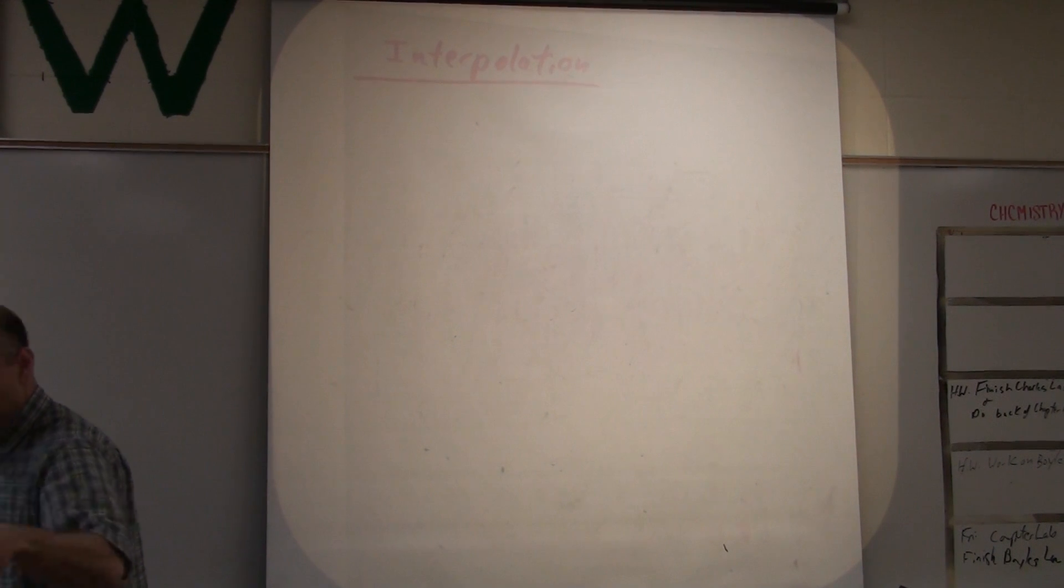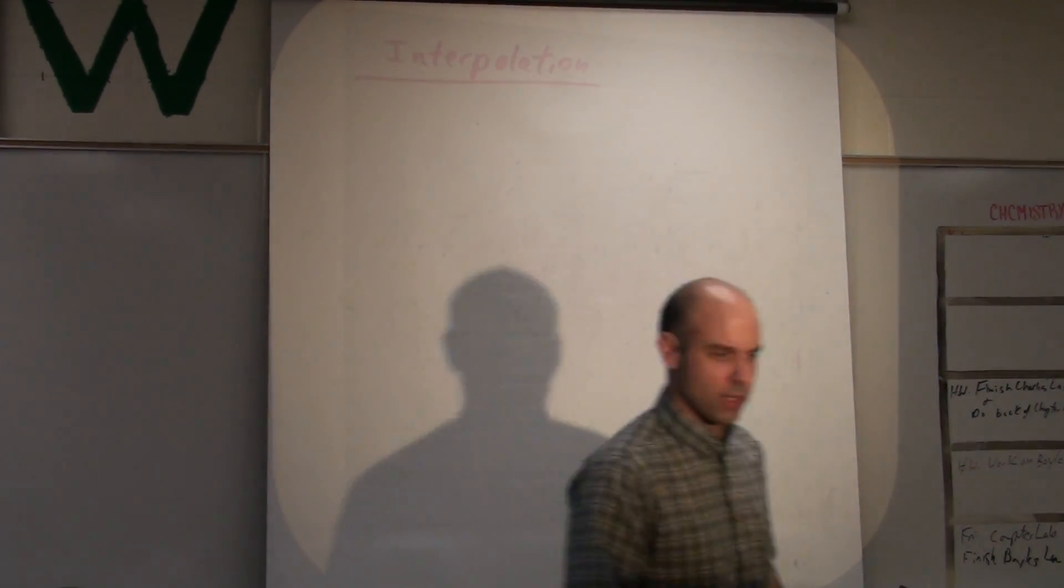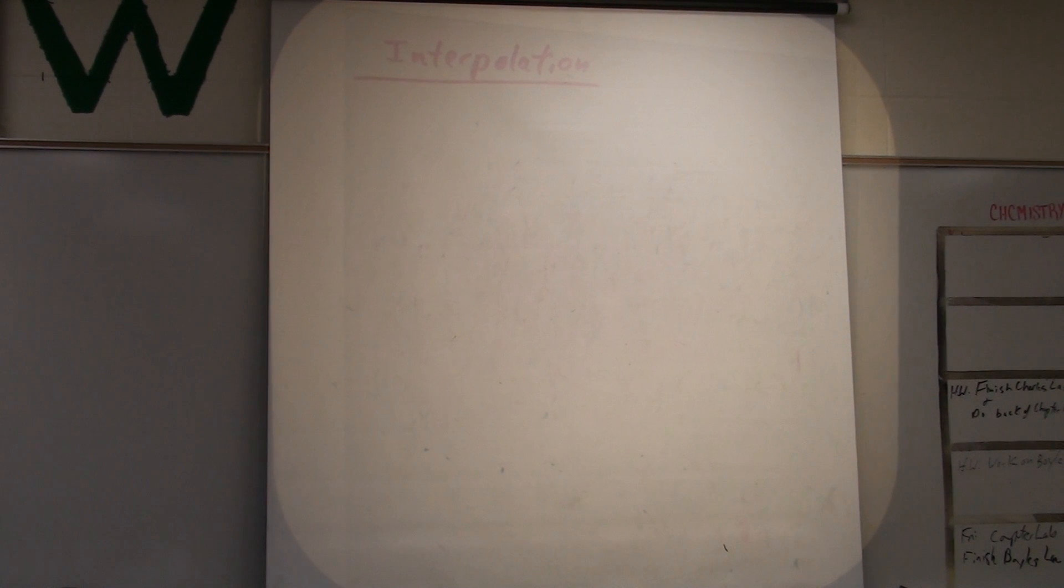So, like I said yesterday, this is one of the college readiness standards. That means if you want to get, I think it's the score band 24 to 27 on the ACT, you need to be able to extrapolate and interpolate. So, don't blame me. I'm actually trying to help you.